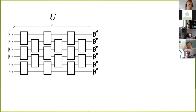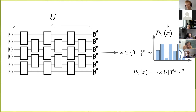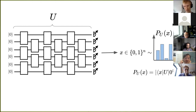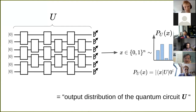Starting quite basic: this is a quantum circuit, or a picture of a quantum circuit, representing a unitary U. When the circuit is measured in the computational basis, the outcome is in general not deterministic but probabilistically sampled according to some probability distribution I've named P_U. The probabilities are given via the Born rule as this overlap. I will refer throughout this talk to such distributions as the output distributions of quantum circuits.